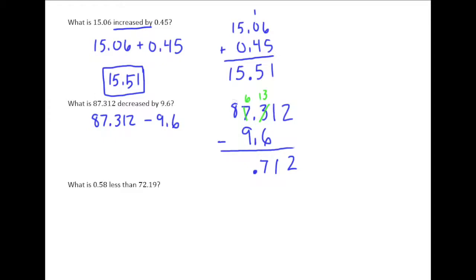But again, 6 is smaller than 9, so we'll need to do more borrowing. So we'll borrow 1 from the 8 and make 6 into 16. So 16 minus 9 is 7, and then, of course, 7 minus 0 is 7.